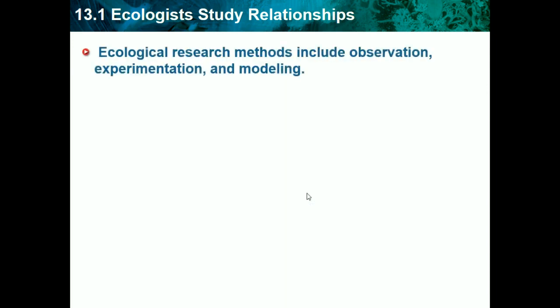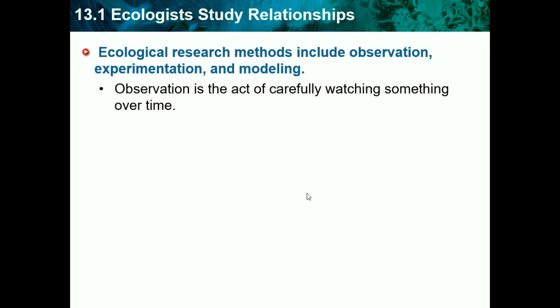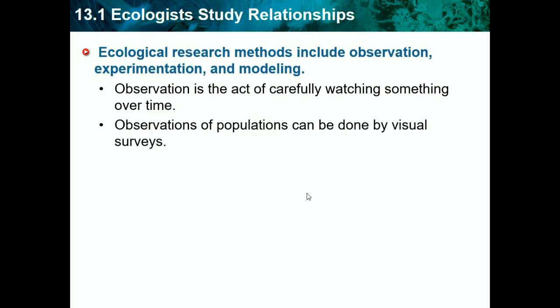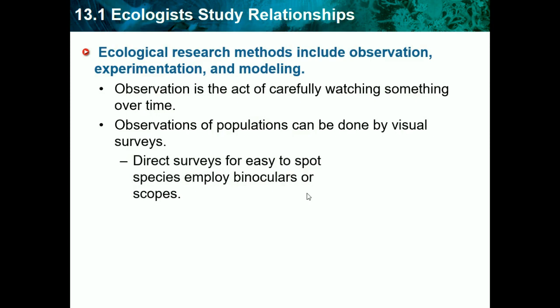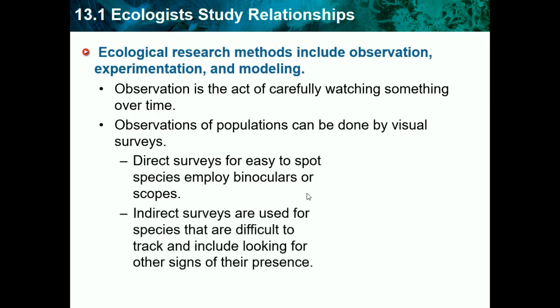Ecological research methods include observation, experimentation, and modeling — the three basic research methods for all scientists. Observation is the act of carefully watching something over time. Observations of populations can be done by visual surveys; direct surveys for easy-to-spot species employ binoculars or scopes. Scientists observe the environment without interfering — they're watching from a distance. Indirect surveys are used for species that are difficult to track and include looking for other signs of their presence, like remains of food or footprints.